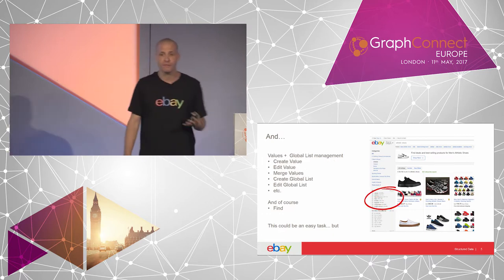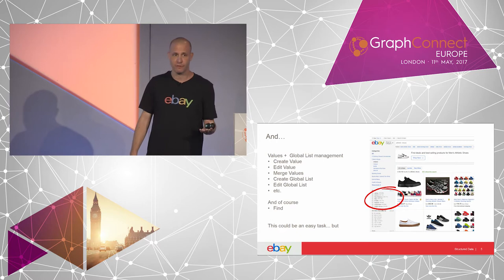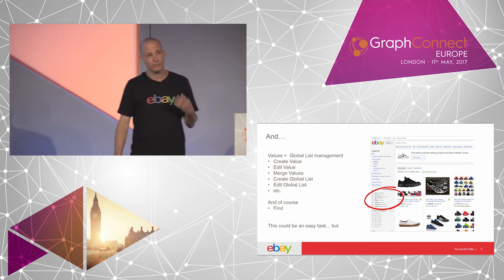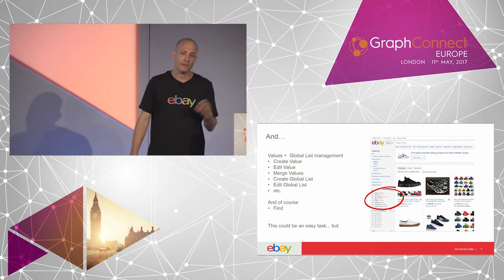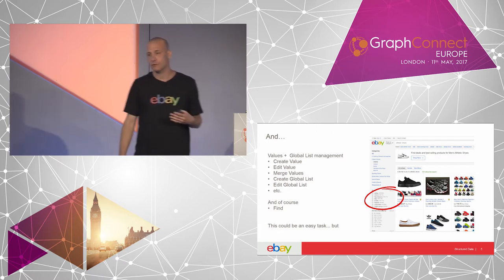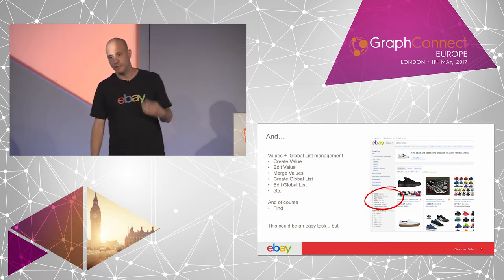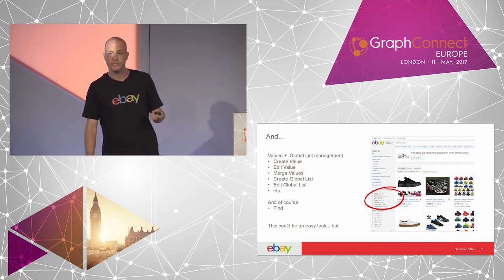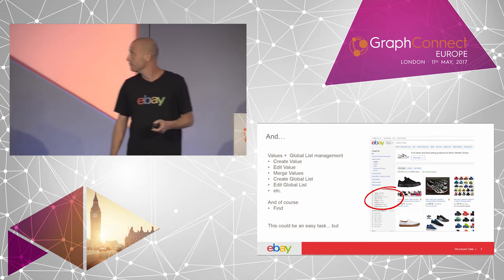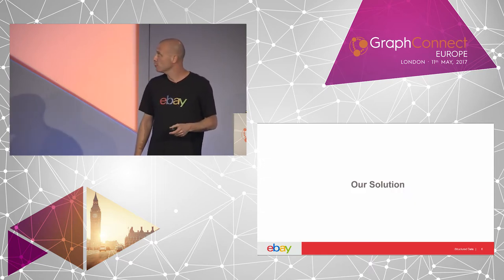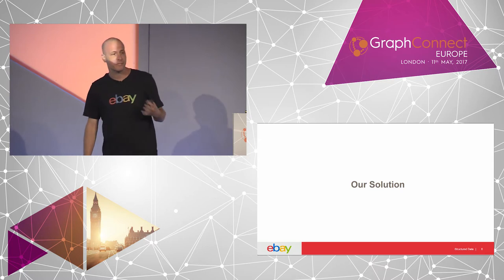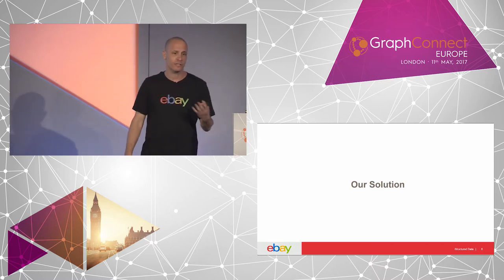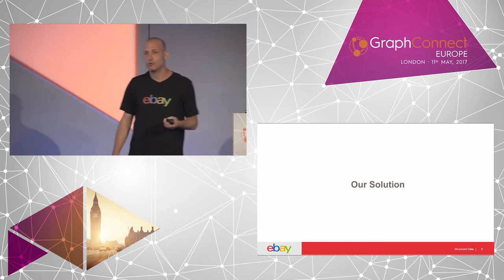And of course you need to relate those aspects to categories. We also have values — a lot of values — and those values also need to be managed: create, merge, update, and be related to aspects and categories. We have a lot of entities to manage, and we don't want to have a specific solution for each one of those entities. So we came out with a solution.